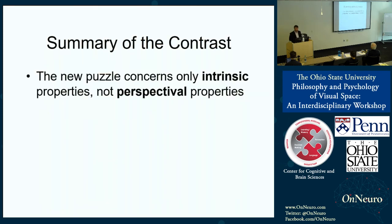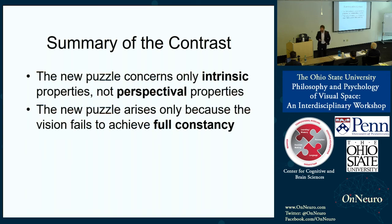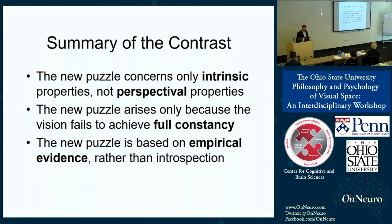To summarize the contrast: the new puzzle concerns only intrinsic properties, not perspectival properties, so you can't solve it by introducing a distinction between intrinsic and perspectival properties — some other solution is needed. The second point is that this new puzzle arises only because vision fails to achieve full constancy. If, contrary to fact, the visual system achieved full constancy, we wouldn't face the new puzzle, though we would still face some version of the old puzzle. Perhaps the key point to emphasize: this new puzzle is based on empirical evidence rather than introspection.